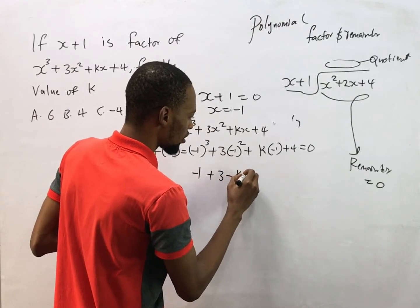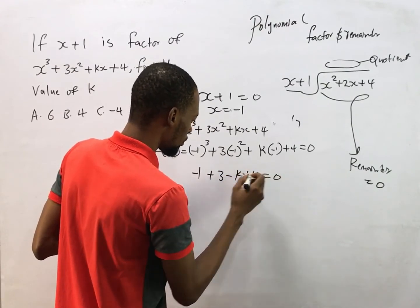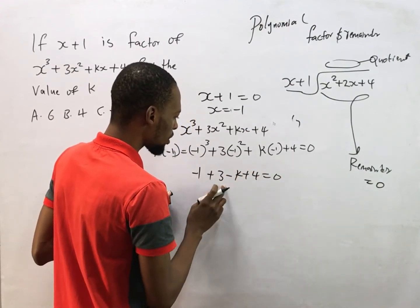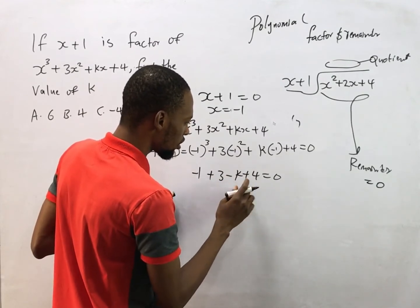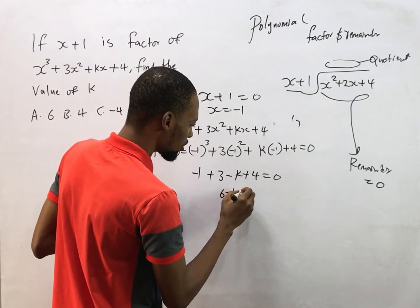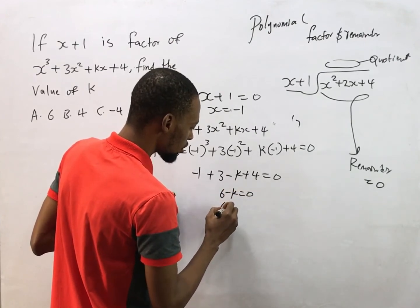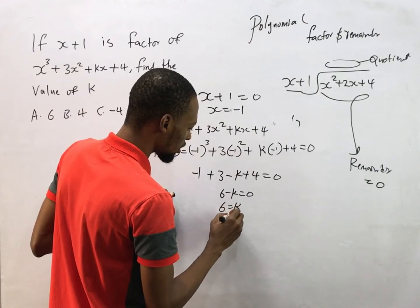2 plus 4 is 6, so we have 6 minus k equals zero. 6 equals k, and k equals 6. So the value of k is simply 6.